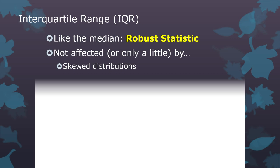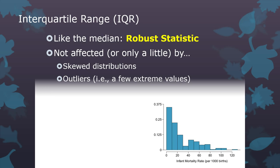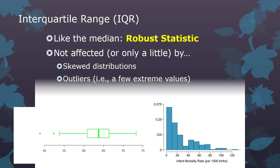It's only a little bit affected, and only under certain circumstances is it affected by skewed distributions, like this is a horribly skewed distribution from a previous presentation, or by outliers, meaning a few extreme values. So the IQR can deal with both of those.